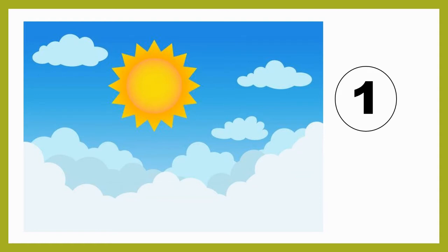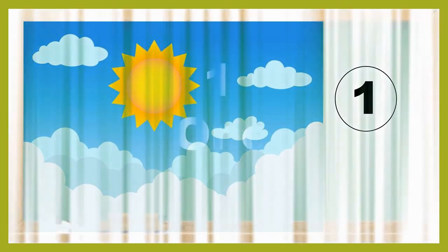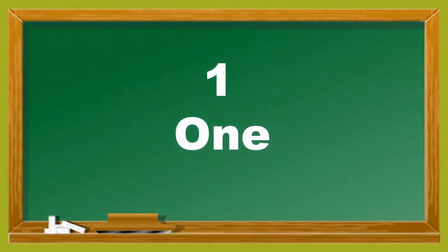Look at the sun. How many suns do you see? Let's count — 1. There is only one sun. Now let's spell the number 1.